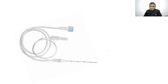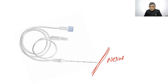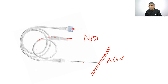This is a nerve-stimulating needle used for nerve blocks. A small current is passed through the needle port; if the tip is near the nerve, the nerve will be stimulated, allowing localization of the nerve before injecting the drug.